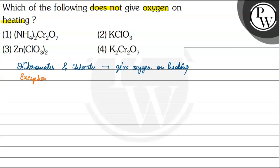The exception is ammonium dichromate — this is the dichromate which does not give oxygen on heating. Now let's see the reactions of all the options.